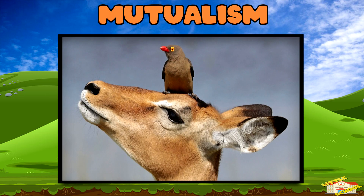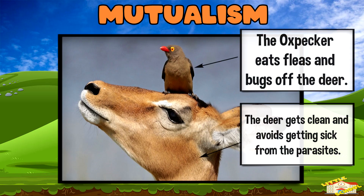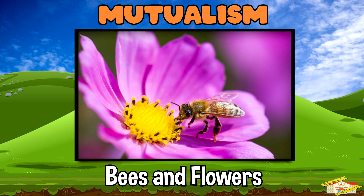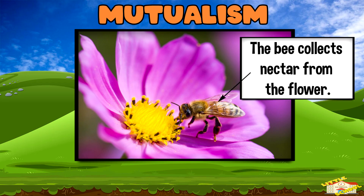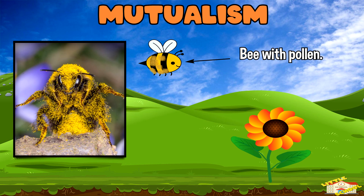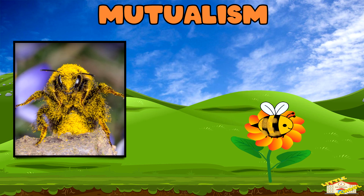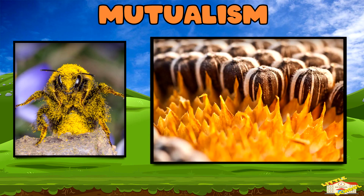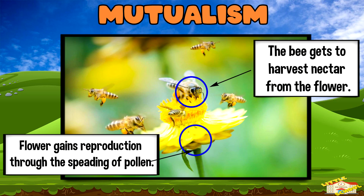Let's begin with mutualism. In mutualism, both partners help each other and both benefit. For example, bees and flowers: bees collect nectar from flowers to make honey. While doing this, they accidentally spread pollen, which helps flowers grow seeds. It's a win for the bees for food, and a win for the flowers' reproduction.